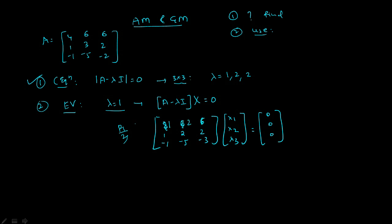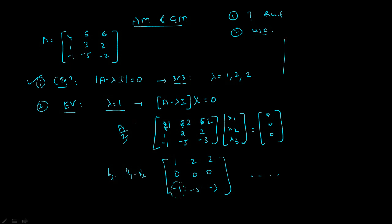After that operation, row 1 is unaffected, row 2 has changed to all zeros, and the last row remains. Now I want to make another term zero as well. I will change row 3 to row 3 plus row 1.